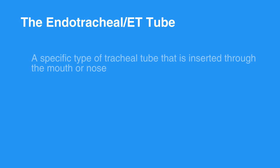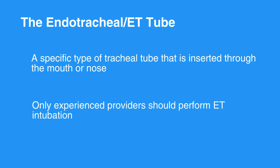The endotracheal tube is an advanced airway alternative. It is a specific type of tracheal tube that is inserted through the mouth or nose. It is the most technically difficult airway to place; however, it is the most secure airway available. Only experienced providers should perform ET intubation. This technique requires the use of a laryngoscope. Fiber-optic portable laryngoscopes have a video screen, improved success, and are gaining popularity for field use.